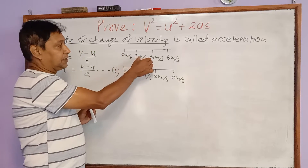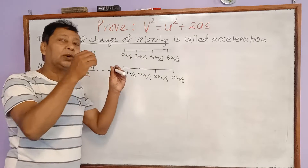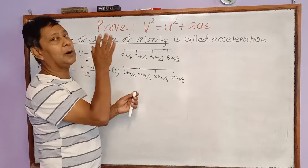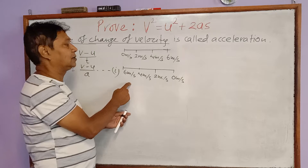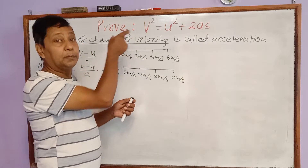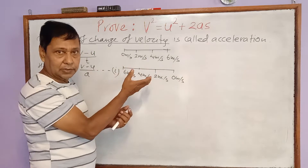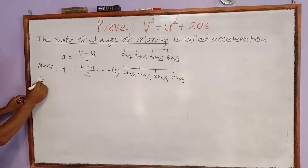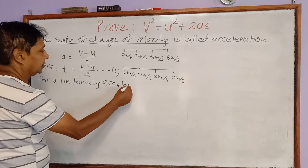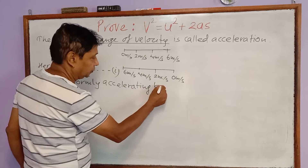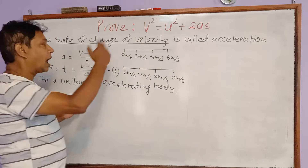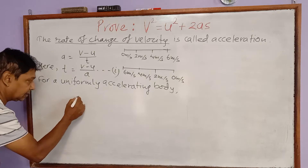What exactly is uniform acceleration? In equal intervals of time, the change of velocity is equal. If a body moves such that its velocity changes by equal amounts in equal intervals of time, it is said to be moving with uniform acceleration. In both cases shown, the body is in uniform acceleration. Since we cannot take a single velocity for a uniformly accelerating body, average velocity is used.